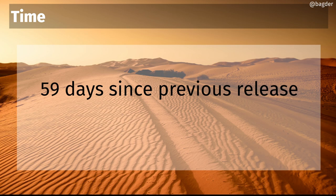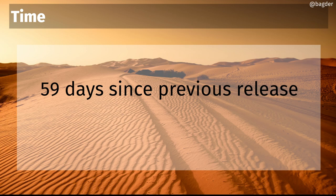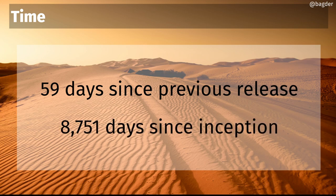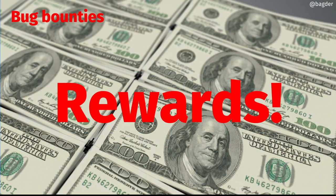In this release cycle, from the previous release until this release, we reached 59 days, which is unusual because we usually go for 56 — exactly eight weeks. So this is eight weeks plus three days, simply because of my ski trip last week. I was away with the family, so I didn't want to do the release on the Wednesday. I did it on the Saturday instead. So we got a 59-day release cycle and we're up to 8,751 days since the first curl release.